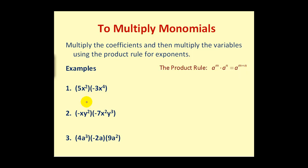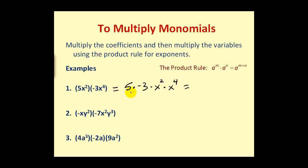So if we want to multiply 5x² times -3x⁴, all of this is attached by multiplication, including 5x², which means 5 times x². We could rearrange the multiplication so that the coefficients are next to each other and the variables are next to each other. Remember, we're allowed to change the order of multiplication due to the commutative property. Once arranged, we multiply the coefficients: 5 times -3 equals -15, and x² times x⁴ using the product rule equals x⁶.